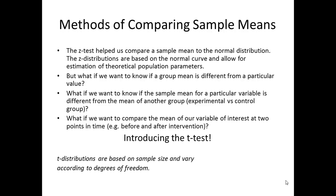The t-distribution is based on sample size and can vary according to degrees of freedom. Here is a formula for the t-test where we compare two different groups. X-bar one is the mean of the first group and x-bar two is the mean of the second group, over the square root of the variances of the two groups added together.